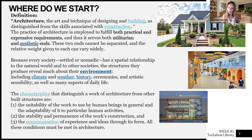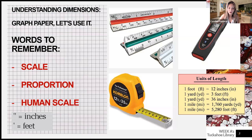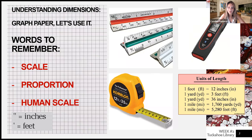Number one: the suitability of the work to use by human beings in general and the adaptability of it to particular human activities — think about a firehouse, which must have a certain height for the fire truck and a certain type of floor. Number two: the stability and performance of the work's construction. Number three: the communication of experience and ideas through its form. All these conditions must be met in architecture. So now we must understand there is dimension behind everything — scale, proportion, and human scale.